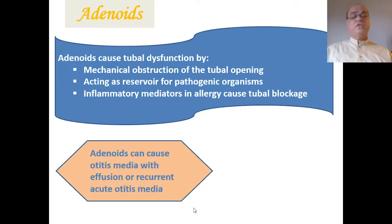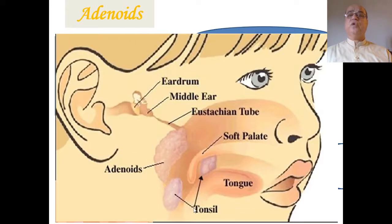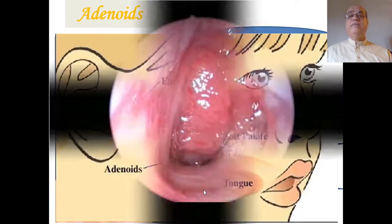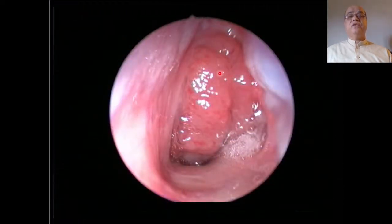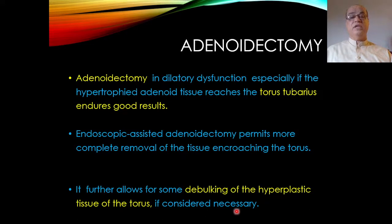Adenoids can cause otitis media with effusion or recurrent acute otitis media. If adenoids are considered the culprit for Eustachian tube dysfunction, we should consider adenoidectomy. You can see in the image the Eustachian tube opening and adenoids present in its vicinity — if their size hampers the opening, adenoidectomy is indicated. Endoscopic assisted adenoidectomy permits more complete removal of tissue encroaching the torus and allows debulking of hypertrophic tissue of the torus if considered necessary.